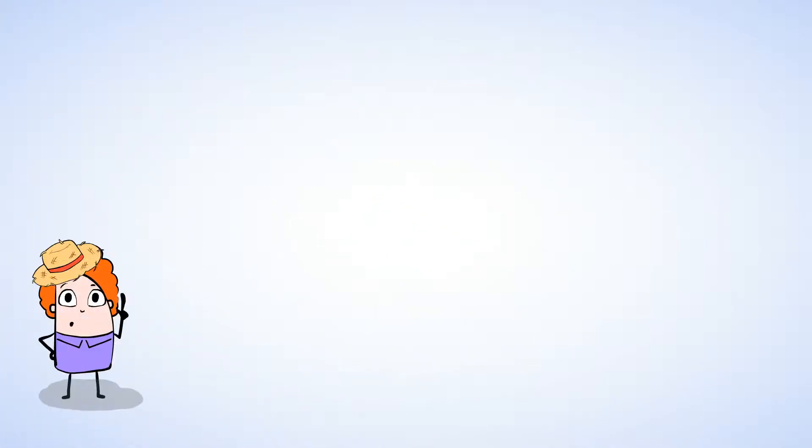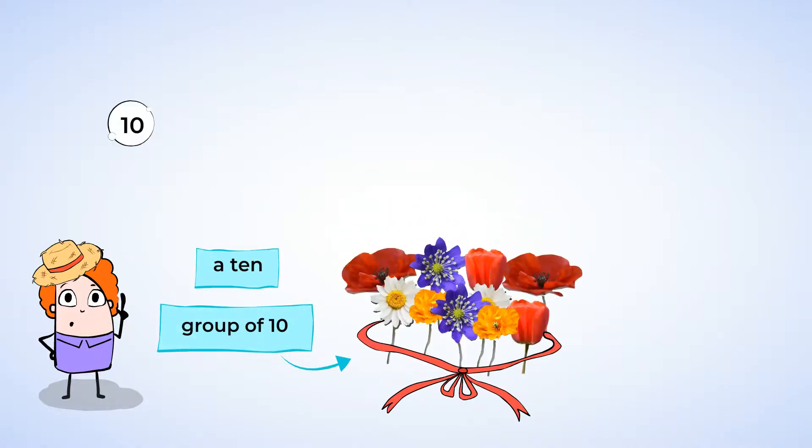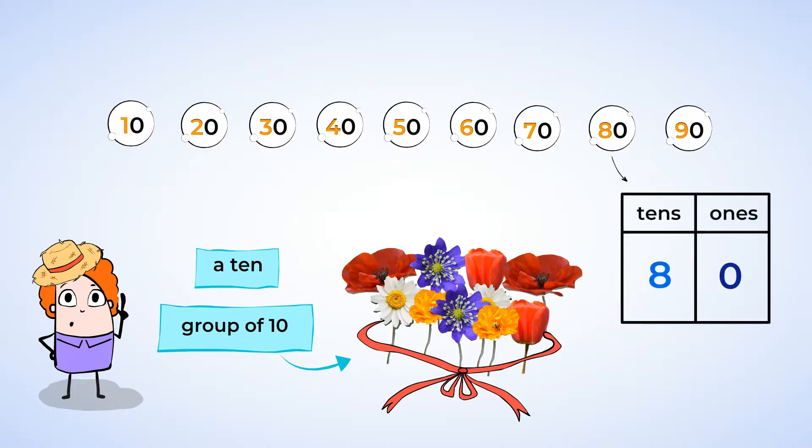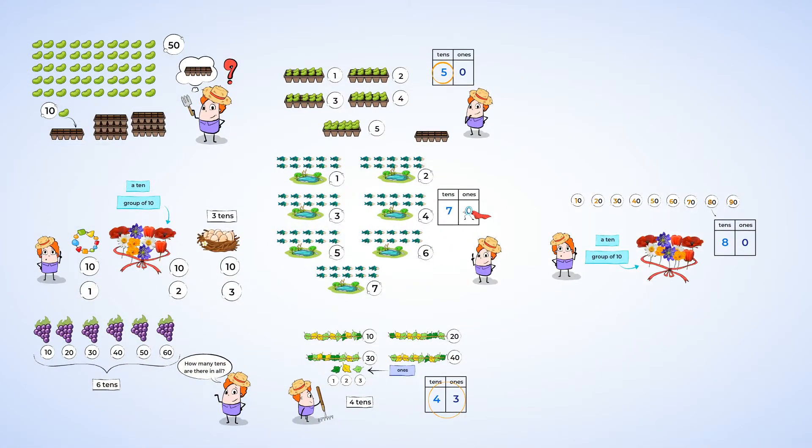Today we learned that a 10 means a group of 10 things. In the numbers 10, 20, 30, 40, 50, 60, 70, 80, and 90, the first number tells us how many 10s there are. The number 80 has 8 10s, as we can see in the place value chart. And because there are no 1s left over after making 8 groups of 10, there is a 0 in the 1s place. You did an awesome job of making groups of 10 today. And I'll see you in the next lesson. See you then.